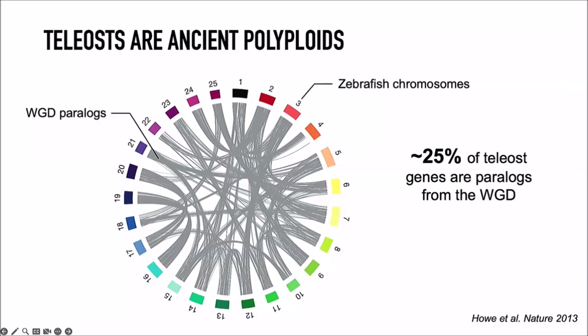Anciently polyploid genomes look like this representation of the zebrafish genome, where each box is a chromosome and each gray line links two genes we are confident are duplicates from the whole genome duplication 300 million years ago. Chromosome 16 is clearly an ancient duplicate of chromosome 19, sharing almost all paralogous genes. Chromosome 2 is more complex, sharing duplicated genes with several different chromosomes, resulting from genomic rearrangements.